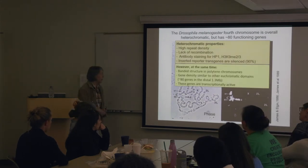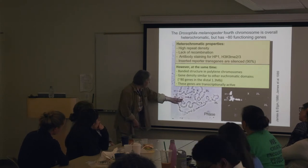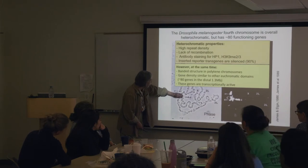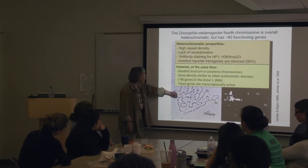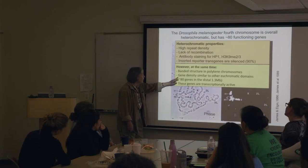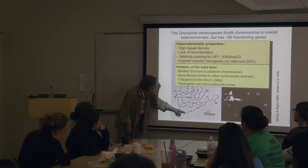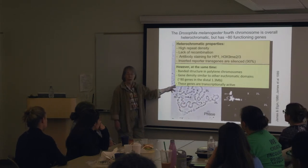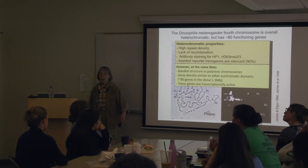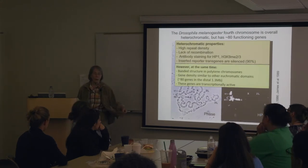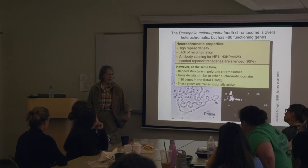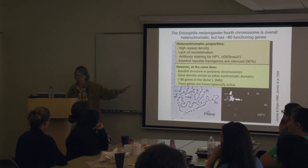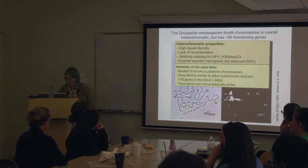At the same time, you'll notice there is a banded structure on the fourth chromosome, characteristic of euchromatic arms, not of pericentromeric heterochromatin. With its 80 genes, it has a gene density quite similar to the euchromatic arms, and those genes are active and important — a number of them are key transcription factors. Eyeless is a fourth chromosome gene — involved in eye formation, it has to be expressed at a certain time and place, and it's a fourth chromosome gene, and it works.